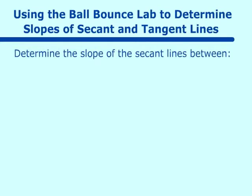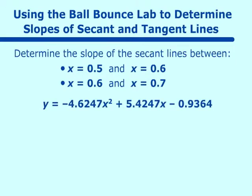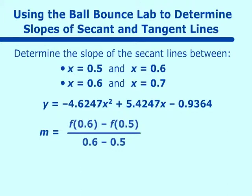For secant lines, we are doing averages. And for tangent lines, we are doing instantaneous. So if we were to compute the slope between 0.5 and 0.6, we would say the slope is equal to function at 0.6 minus the function at 0.5 over 0.6 minus 0.5. If we went to our calculator and computed this, and this is our original graph.